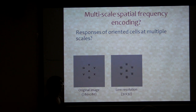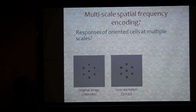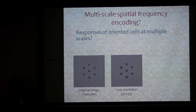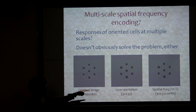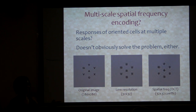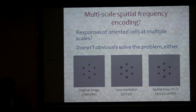You might prefer to do something more V1-like before you start shoving things through the bottleneck — do oriented filters at different and multiple scales and then reduce to 1,000 numbers. Well, that doesn't obviously solve the problem either. That basically looks much the same. Here I'm using the discrete cosine transform, but if you do something more biologically plausible it looks very similar, only worse. So that doesn't seem like a good idea either.